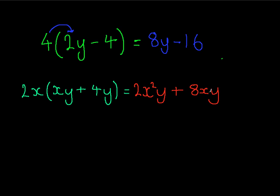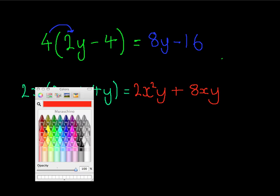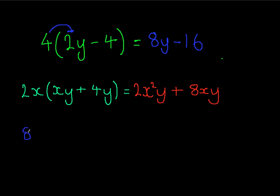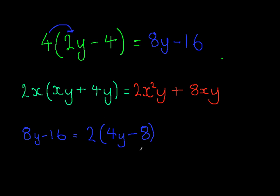They could give you the question in vice versa. So let's just say we had 8y minus 16 and they would say factorise this. You'd have to work backwards — think of a number that could go into 8 and 16. You could do 2 or 4. Let's just do 2 for this one. So 2 brackets 4y minus 8. 2 times 4 equals 8, and 2 times 8 equals 16. And that would be factorising.